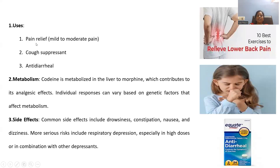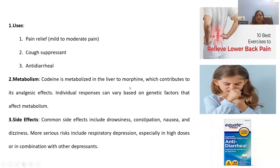Moving to uses — we treat codeine for relieving mild to moderate pain, not severe pains. It is also used to relieve cough conditions and as an anti-diarrheal. Codeine is metabolized in the liver. Most drugs are metabolized in the liver, which adjusts everything. Liver metabolism transforms codeine into morphine, which contributes to the analgesic effect. Morphine is a potent analgesic agent with many applications.